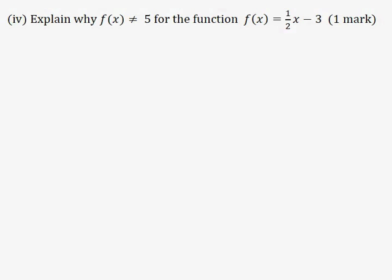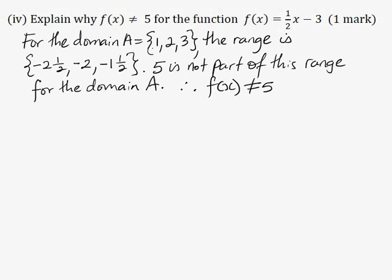Part 4: Explain why f(x) cannot equal 5 for the function f(x) = (1/2)x minus 3 for one mark. The domain is {1, 2, 3} and the corresponding range is {-2.5, -2, -1.5}. Since 5 is not part of this range for the given domain, f(x) cannot equal 5.